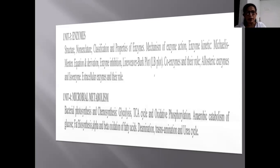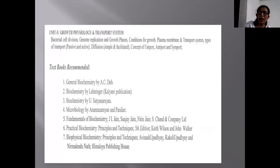The Microbial Metabolism. Next unit is the Microbial Metabolism which consists of the Bacterial Photosynthesis and Chemosynthesis, Glycolysis, TCA Cycle that is Tricarboxylic Acid Cycle, Oxidative Phosphorylation, Anaerobic Catabolism of Glucose, Fat Biosynthesis, Alpha and Beta Oxidation of Fatty Acids, Deamination, Transamination of Urea Cycle.